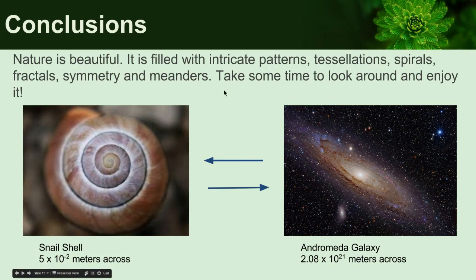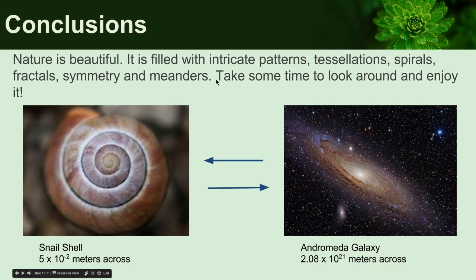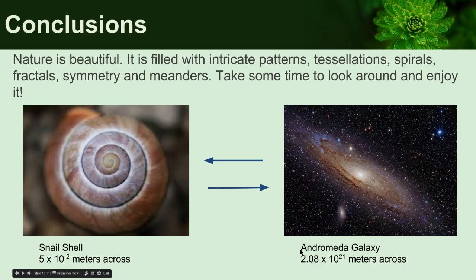In conclusion, nature is beautiful — go outside and appreciate it. Sometimes you can just walk through a forest or down the street, look at trees around you, and it's truly breathtaking. To reiterate: we see spirals in a snail shell that's about 5 centimeters across, and then we see spirals in the Andromeda galaxy, which is 2 times 10 to the 21st meters across. Such different scales in space, but such similar patterns — it's really breathtaking and interesting. Thank you guys for watching, and I'll see you later.